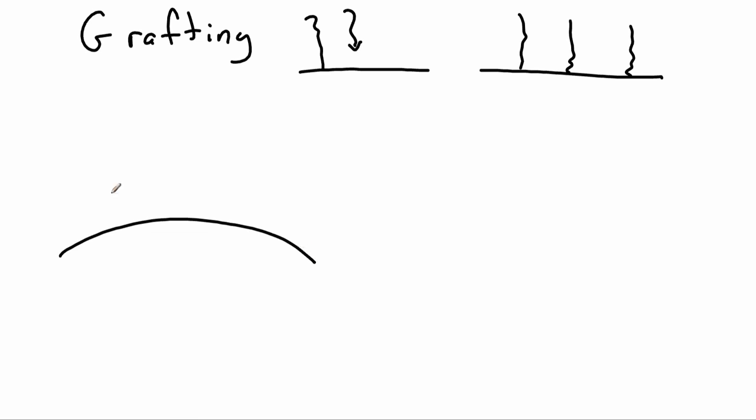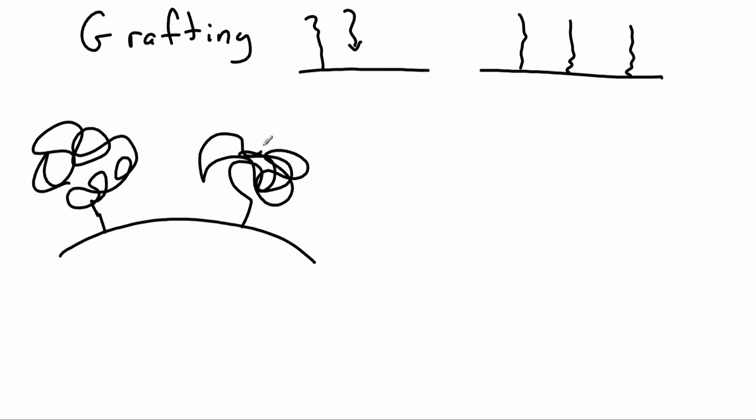If the density of polymer chains is not too high, what can happen is they can form their full random coils out here. And this is called the mushroom conformation.